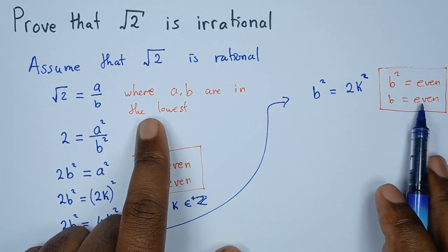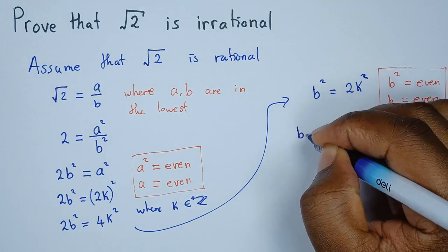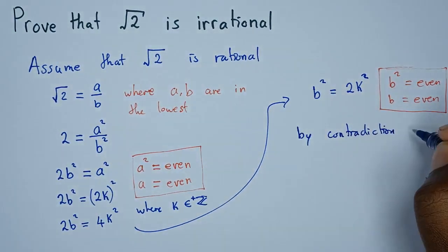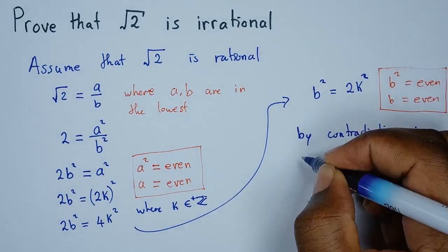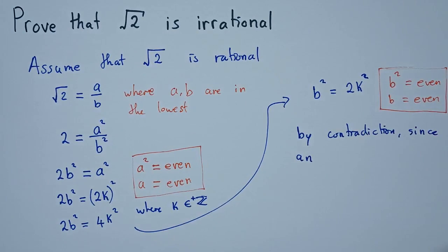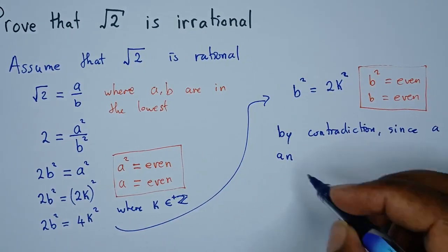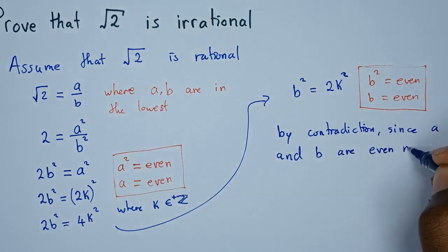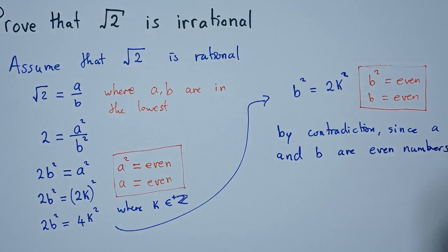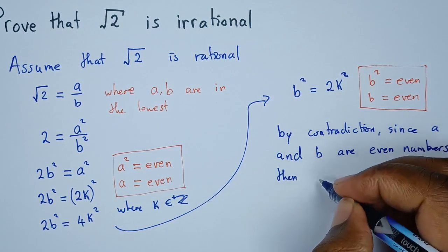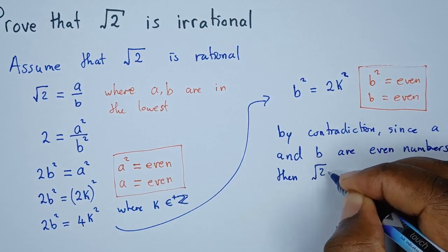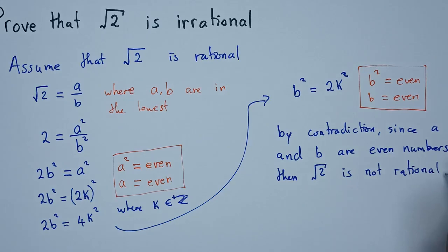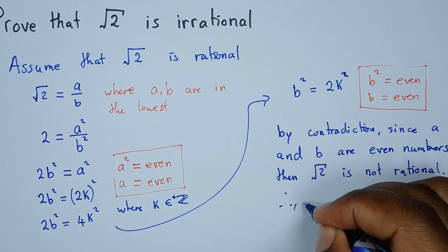So we can say by contradiction, since a and b are even numbers, then root 2 is not rational. So what happens if it's not rational? Therefore, the root of 2 is the opposite, which is irrational. So that's how we prove by contradiction.